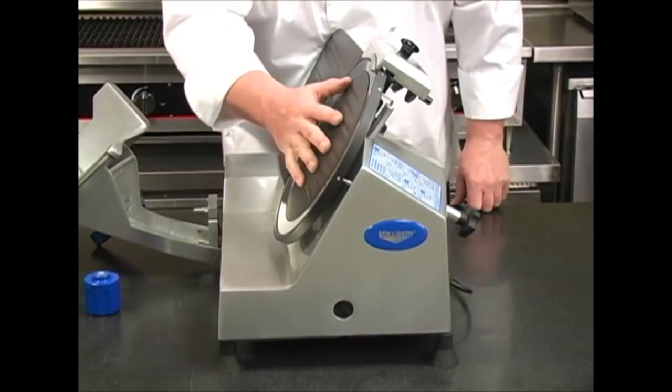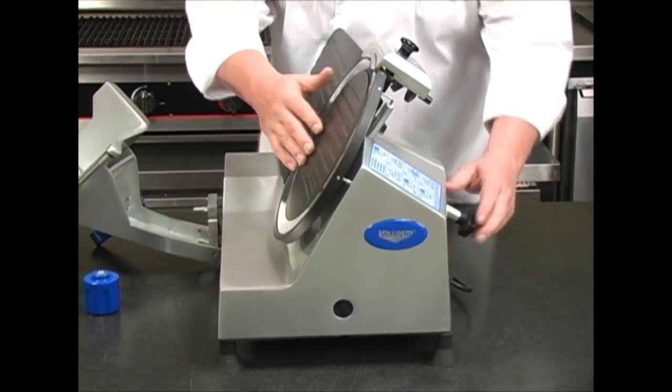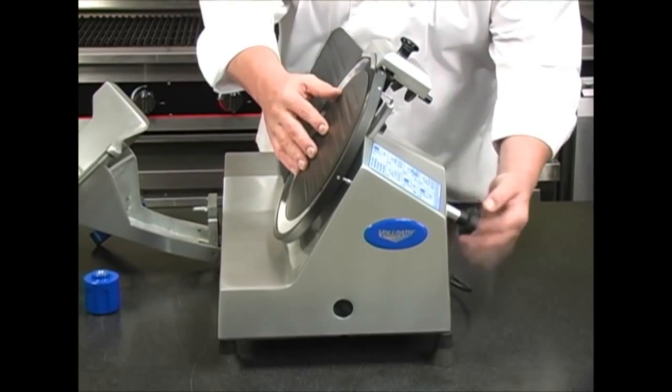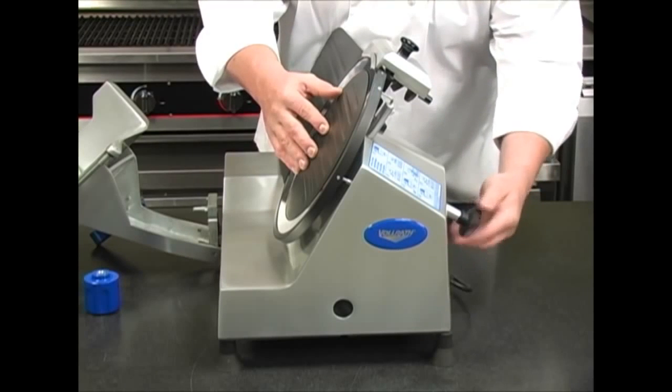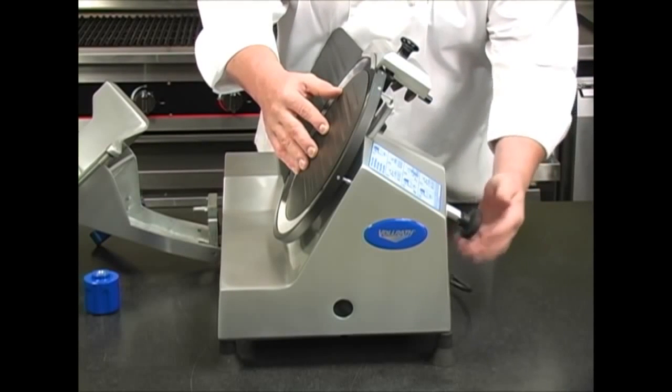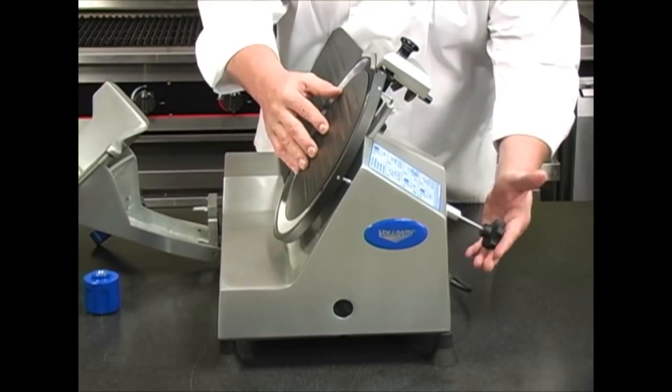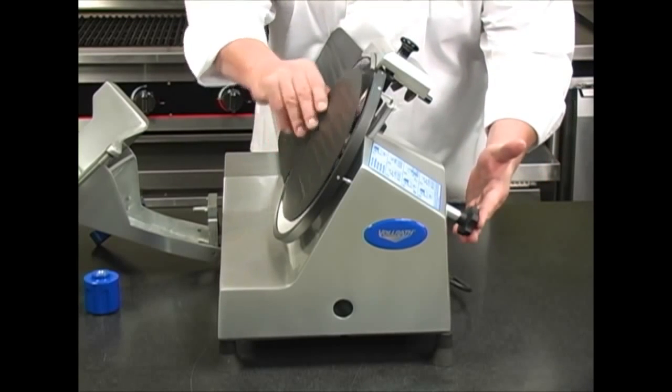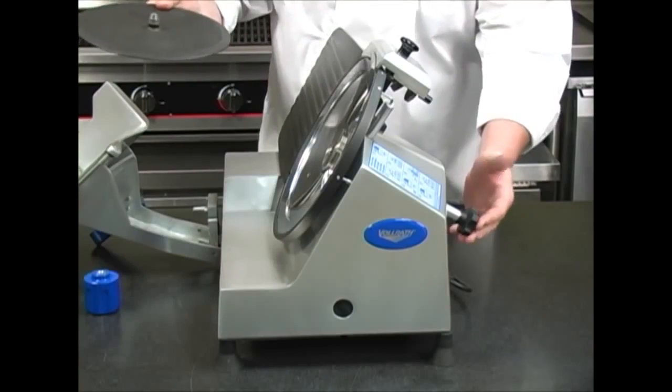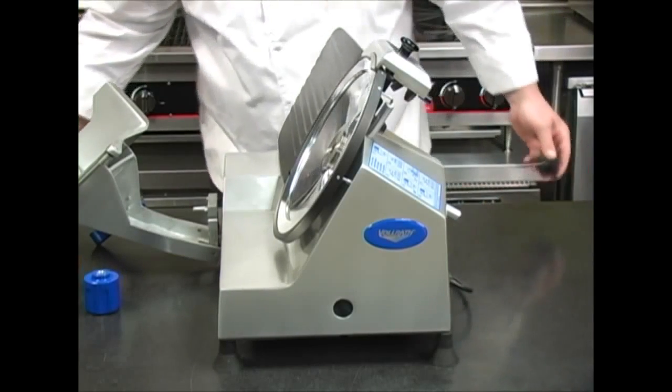Next we'll remove the blade faceplate. We do this by removing the nut on the back side of the unit and I don't remove this all the way. I actually use this when it's loose to push back against the faceplate to make it easier to remove. Now I can remove the faceplate.